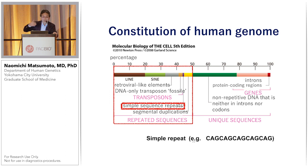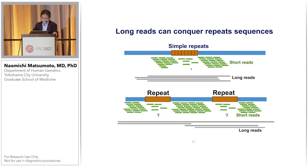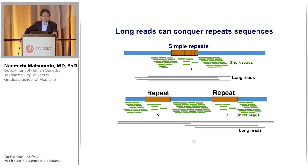Usually we ignore this region, especially in short-read sequencing. But using long-read sequencing, we can focus on this area, because long reads can span the repeat region as well as the unique region. That's why accurate mapping is possible.